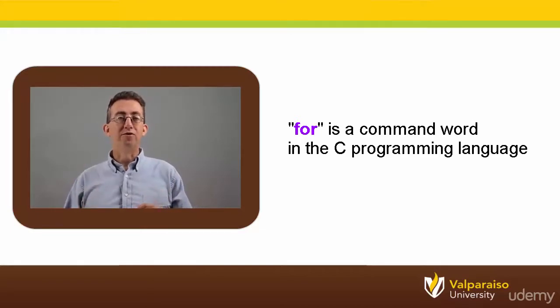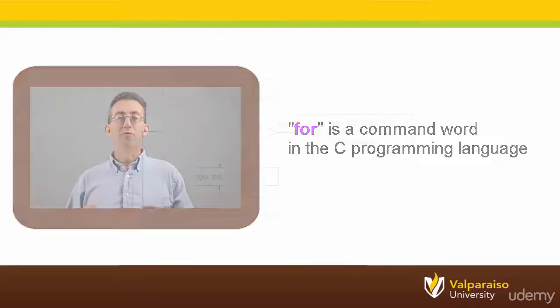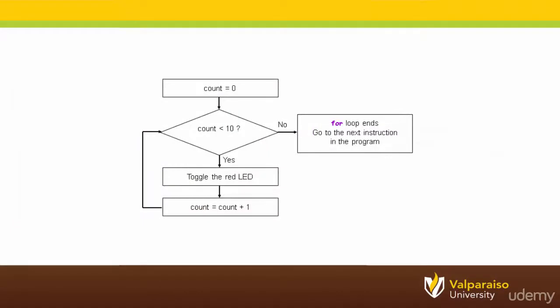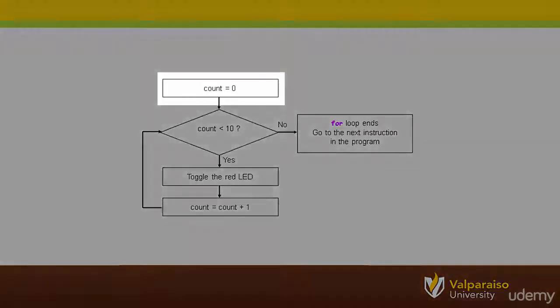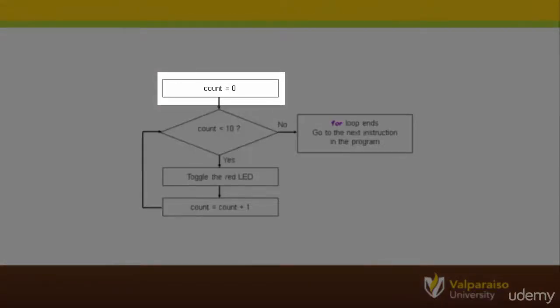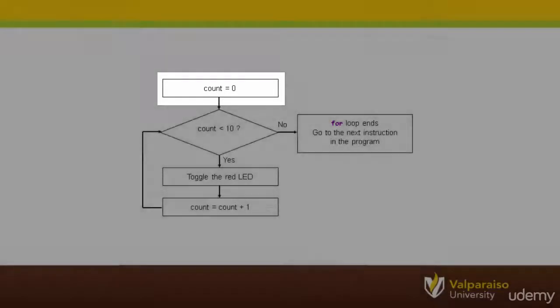The best way to understand for loops is to see an example. Here we'll use a tool called a flowchart to show how a for loop works. The for loop begins by initializing a control variable. In this example, the control variable is called count and it is initialized to have a starting value of zero. This means that the program is reserving space in the microcontroller's memory that it is calling count and it will initially have a value of zero.